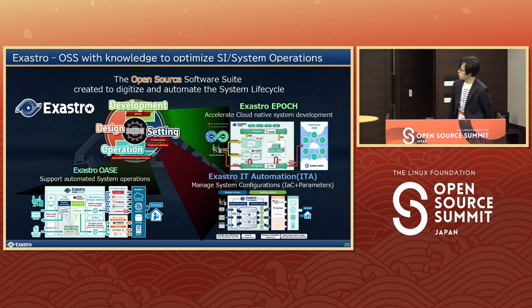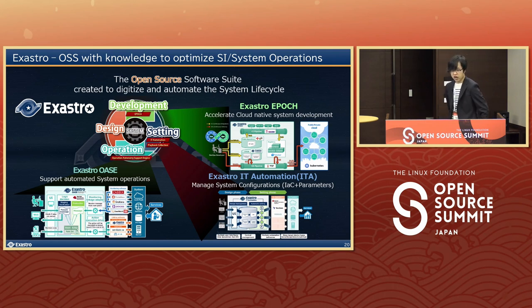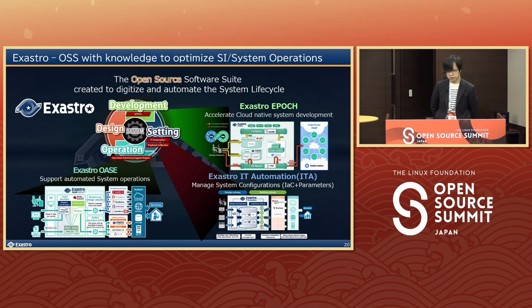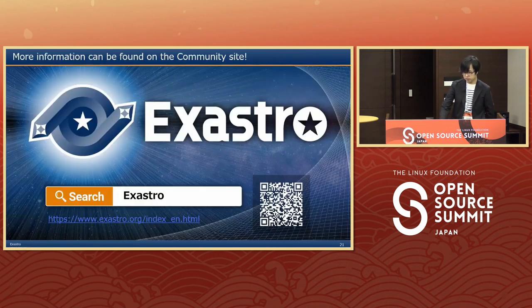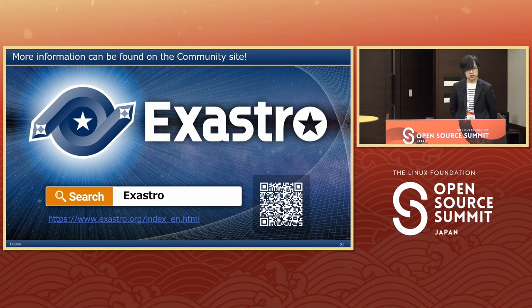We also have Exastro Epoch, the green one on the screen — our brand new DevOps tool created to accelerate cloud-native system development. Just note that Epoch is not readily available overseas, but it will be available very soon. If you have any questions regarding any of the software on the screen, feel free to shoot us an email or ask us after this presentation. You can also find more information by searching for Exastro or following the QR code on the screen. Both Exastro ITA and Oase are available in both English and Japanese, along with all the documentation, guides, and an FAQ page.